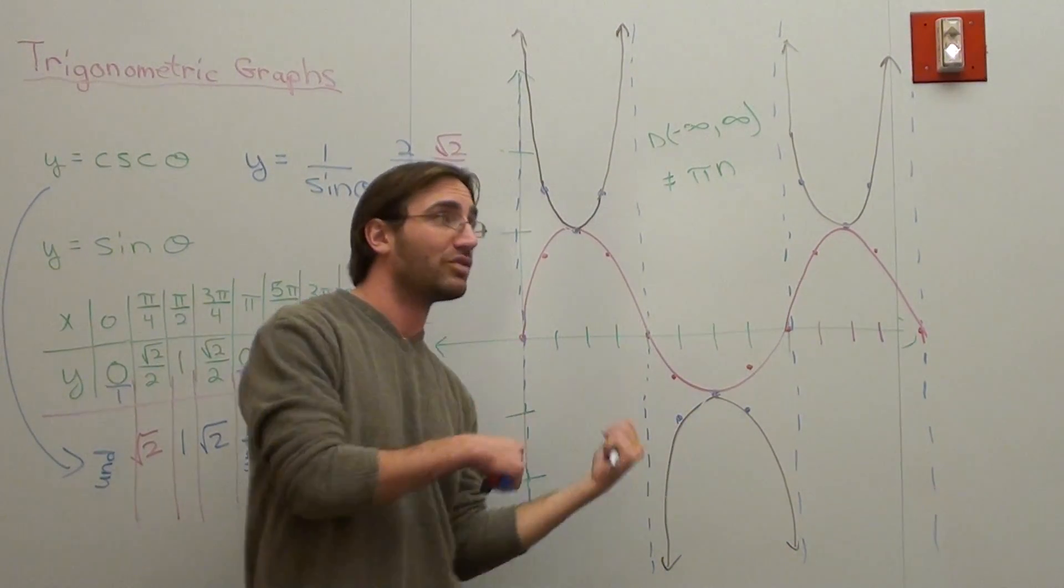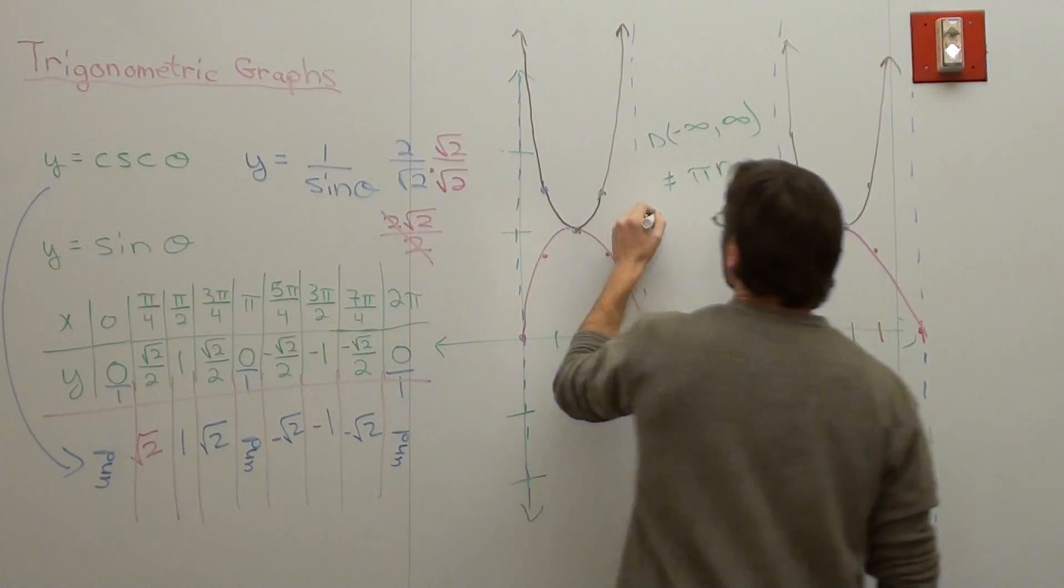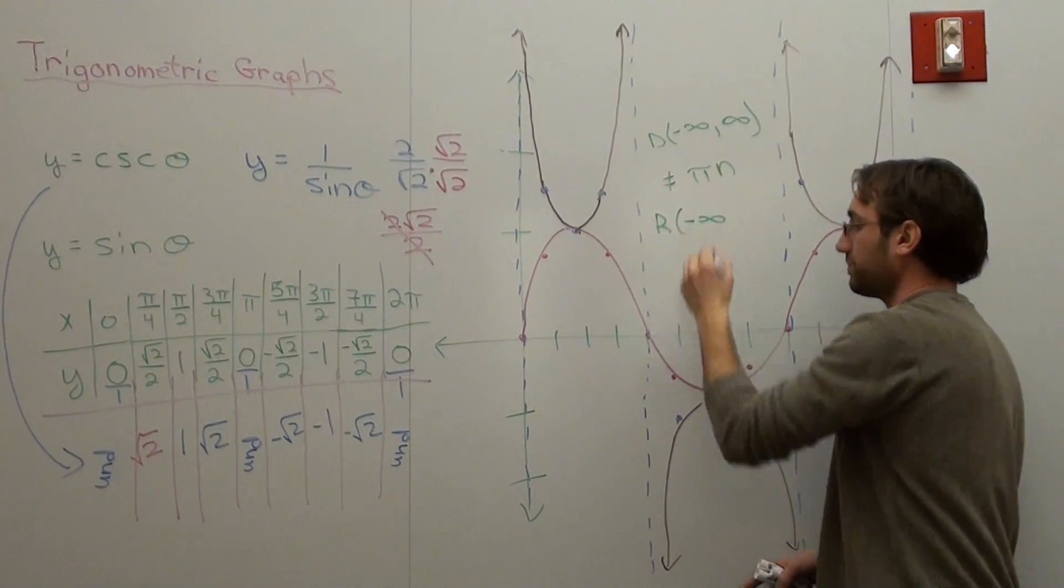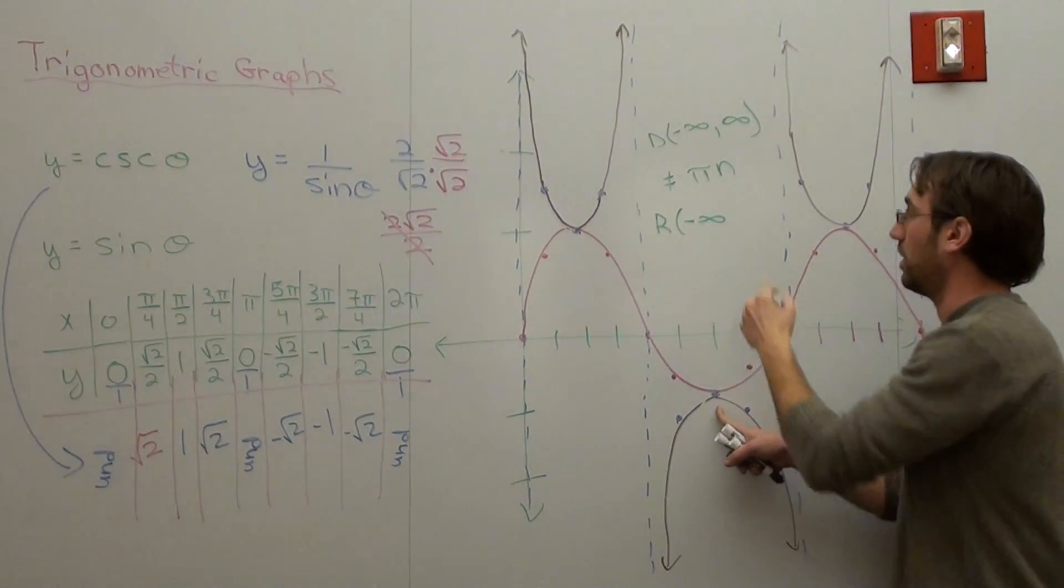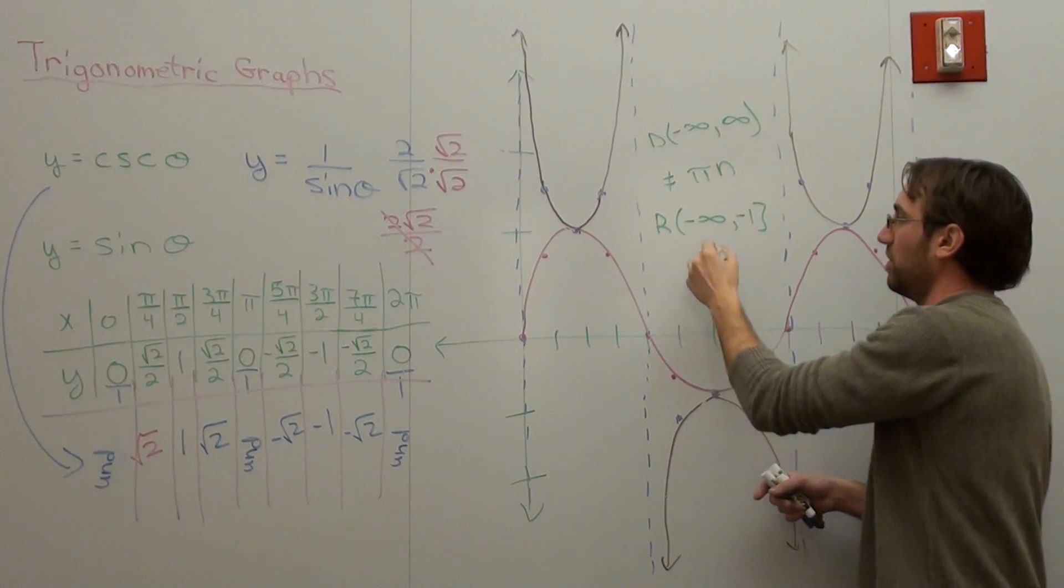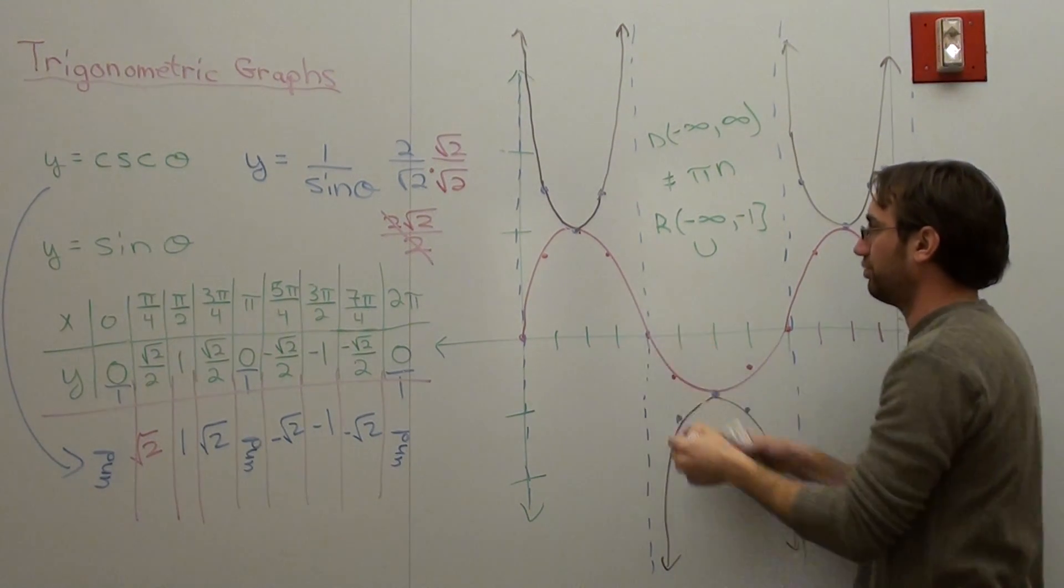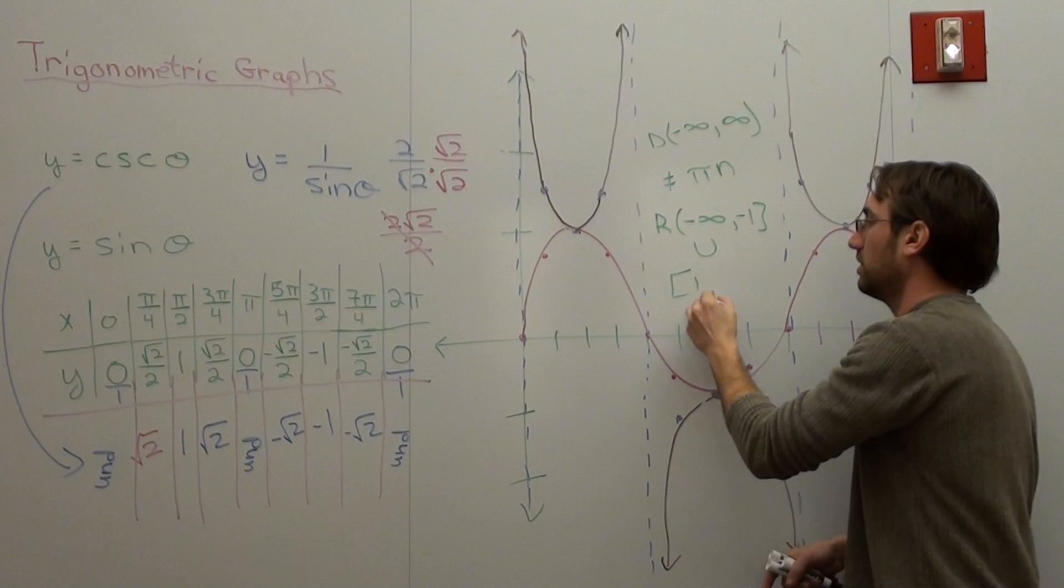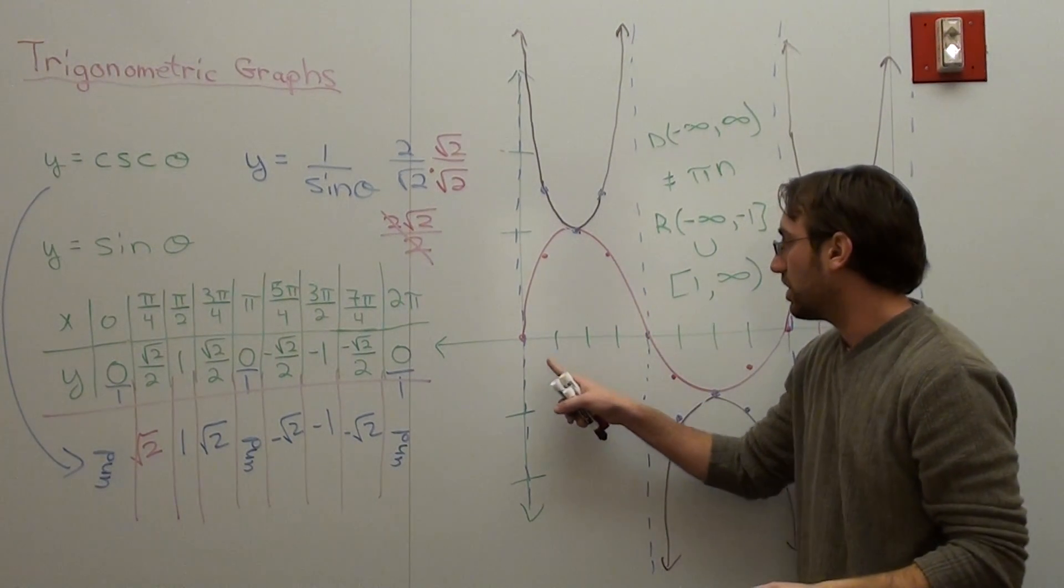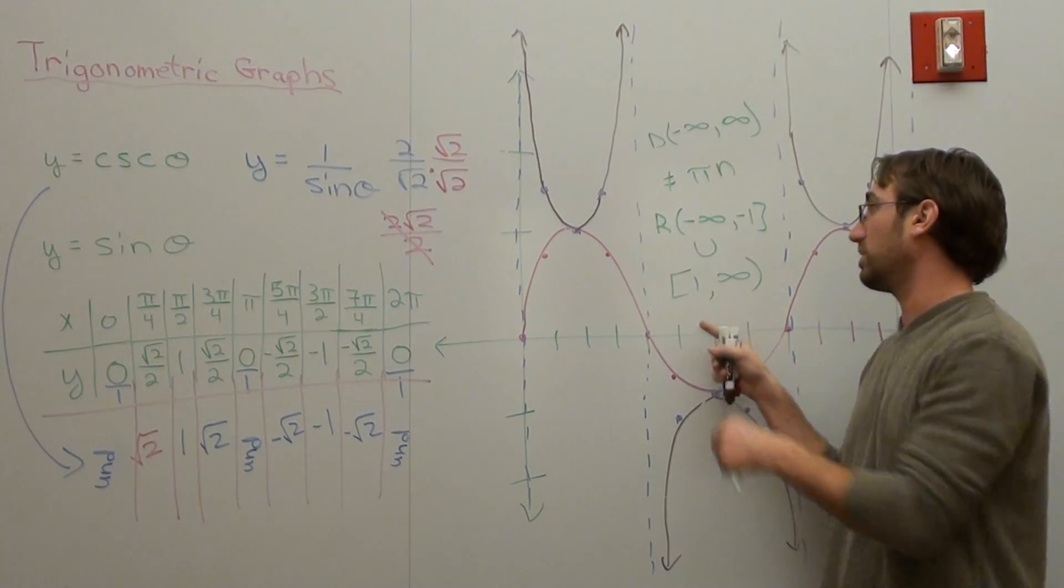The range for this graph is from negative infinity to negative one, then it's in union with one to infinity. It doesn't include any of the values between negative one and one. It does include negative one and one, but it doesn't include any of the values in between those because you can't graph your cosecant there.